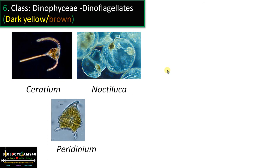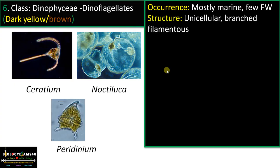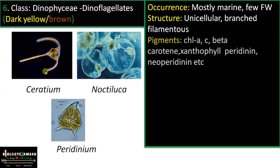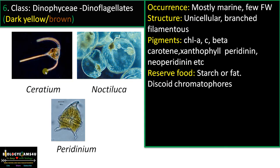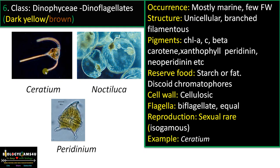Class 6 is Dinophyceae — the dinoflagellates, the bioluminescent algae widely present in oceans. They occur mostly marine, rarely freshwater. Structure can be unicellular, branched, or filamentous. Pigments include chlorophyll A and C, beta-carotene, xanthophyll, peridinin, and neoperidinин. Reserve food is starch or fat; they have discoid chromatophores. Cell wall is cellulosic. Flagella: biflagellate, equal (isocont). Sexual reproduction is very rare. Examples include Ceratium, Noctiluca, and Peridinium.